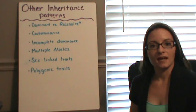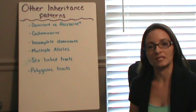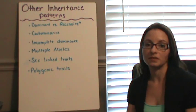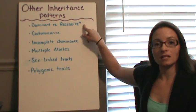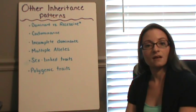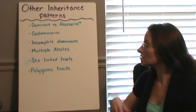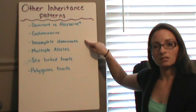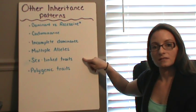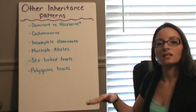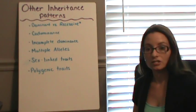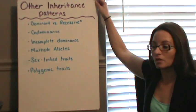We've been talking about Mendelian genetics and the fact that dominant traits show over recessive traits. However, many of the things and the traits within our body do not show complete dominance or recessiveness. Today we're going to discuss a couple of other options of inheritance patterns: co-dominance, incomplete dominance, multiple alleles, sex-linked traits, and polygenic traits. We're going to look at how they affect the phenotypic expression of these traits.